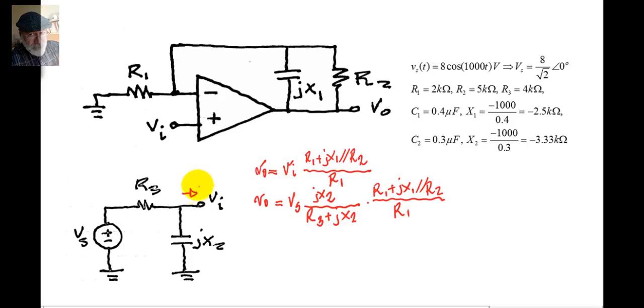That is a quick question that you could have solved up front, at the very beginning, because this current here is zero, zero amps. It is an input current to an ideal op amp.